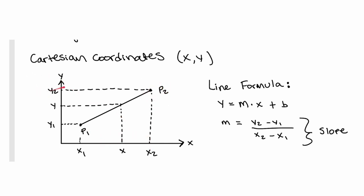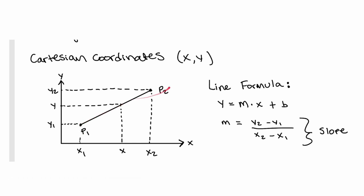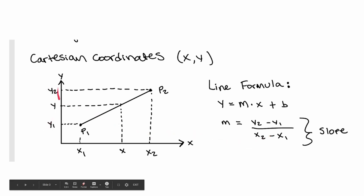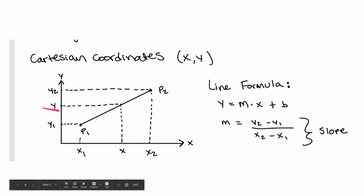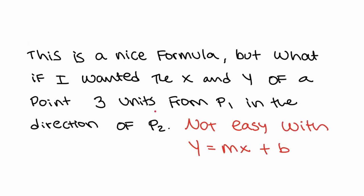Then we can make another point P2, which has an X coordinate of X2 and a Y coordinate of Y2. We can draw a line between P1 and P2, and that line can follow the math formula Y equals MX plus B, which we've all learned in school. Y is the Y value for a given X, where M is the slope, and the slope of a line is equal to the change in Y divided by the change in X. So M for this line would be Y2 minus Y1, divided by X2 minus X1.